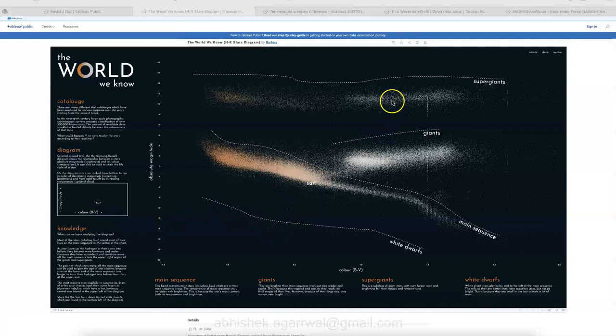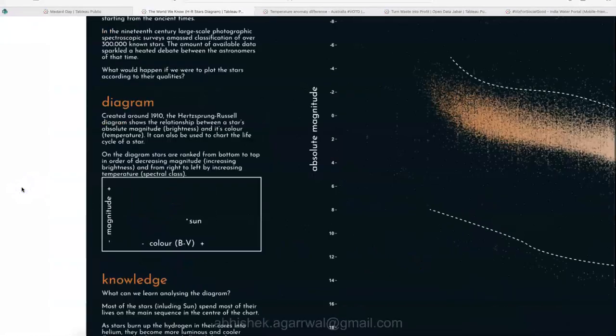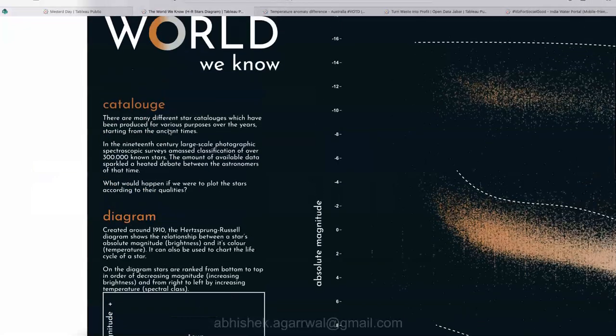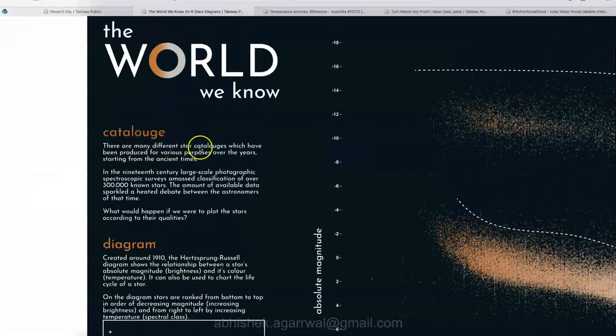So what's basically going on over here is you have different lines like super giants, giants. Here you have the sun, main sequence, white dwarf. So for this, we need to expand the chart.